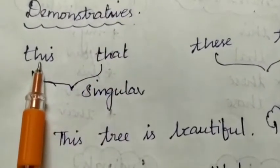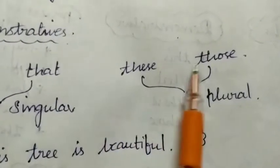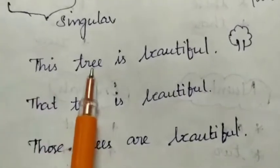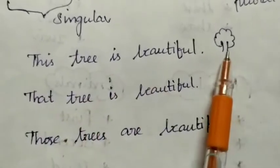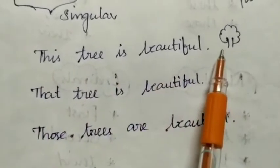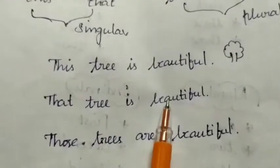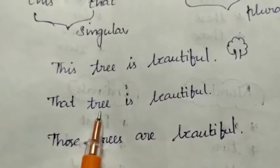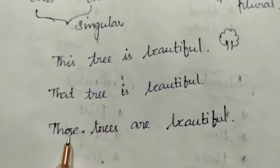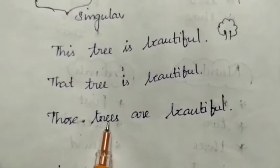We use 'this' and 'that' for singular nouns, and 'these' and 'those' for plural nouns. For example: 'This tree is beautiful' — singular. 'That tree is beautiful' — also singular. 'Those trees are beautiful' — plural.